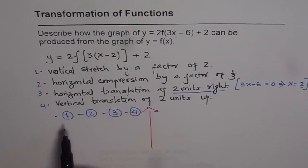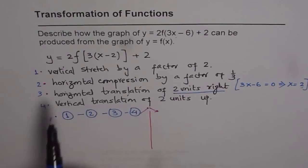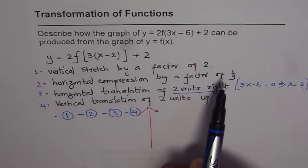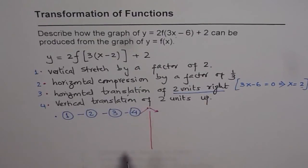Now, when I say these steps, step number 1, 2, 3, and 4, it basically means you could do vertical stretch by a factor of 2, then horizontally compress by a factor of 1 third, and then translate two units right and two units up.